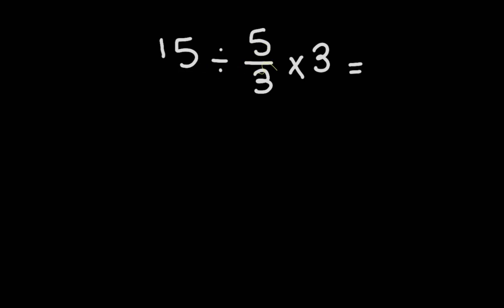15 divided by 5 over 3 times 3. Now we can simplify this expression: 3 divided by 3 gives us 1, 3 divided by 3 gives us 1. Now we have 15 divided by 5, so the final answer is 3.